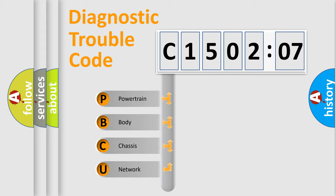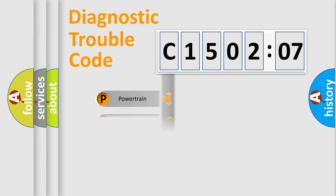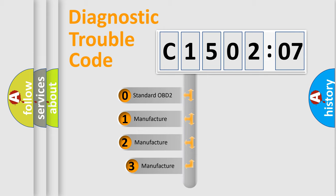We divide the electric system of automobile into four basic units: Powertrain, Body, Chassis, and Network. This distribution is defined in the first character code.